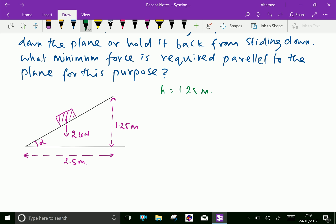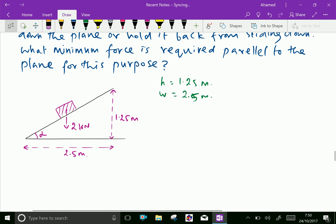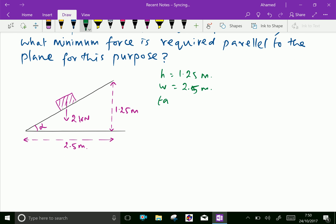We can find tan alpha equals opposite 1.25 over 2.5. From that we can calculate alpha equals tan inverse of 1.25 over 2.5.